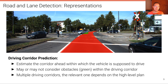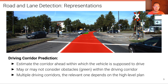Another output representation is the driving corridor. A driving corridor prediction estimates the corridor ahead within which the vehicle is supposed to drive — it's also a per-pixel mask. It may or may not consider obstacles; when it does, areas intersected by obstacles are marked with a different label. There are multiple possible driving corridors, and the relevant one depends on the high-level plan — for example, going straight through an intersection or taking a left turn.